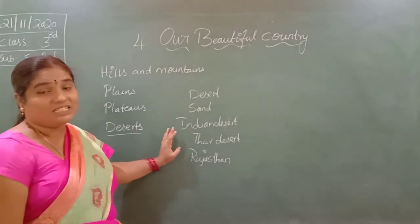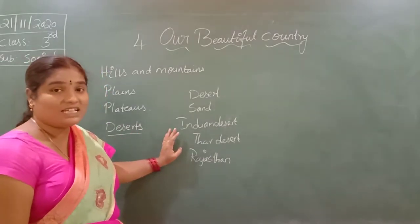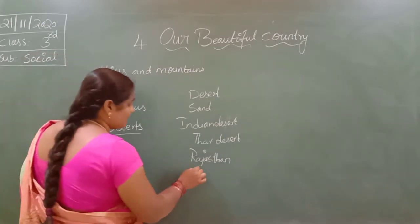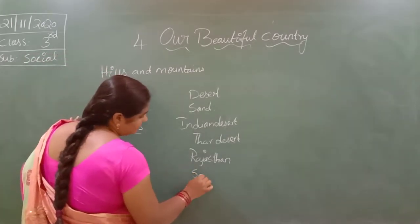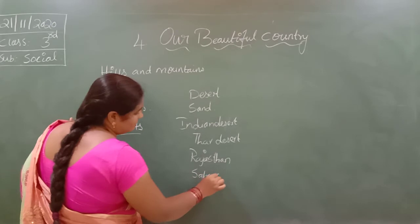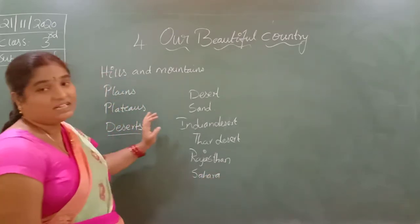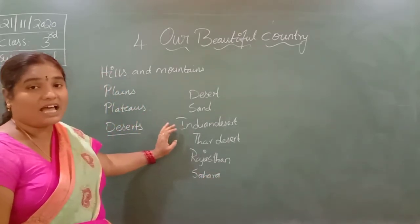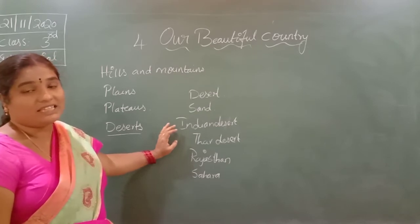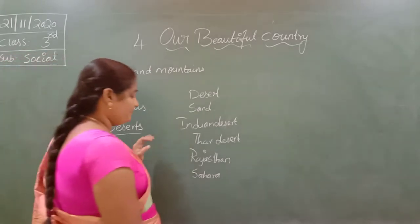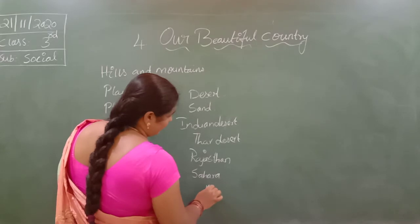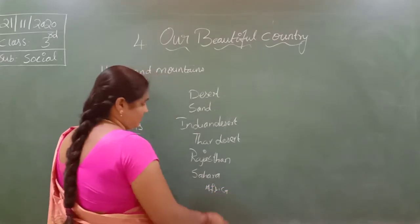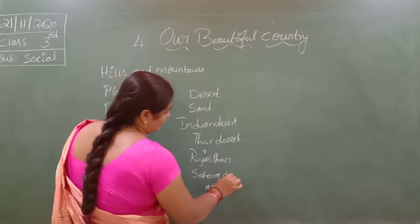Which is the largest desert? Sahara Desert is the largest desert in the world. It lies in Africa.